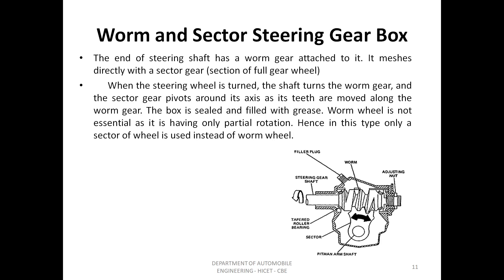Three adjustments are obtained in the worm and sector gear: shim adjustment for the end float of the inner column; shim or screw adjustment for the end float of the rocker socket; and the closer movement of the gears together for backlash between the gears. The gear is manufactured with larger backlash in the lock position due to greater wear. The risk of seizure at the full lock is reduced. Wear is compensated by adjusting the box.